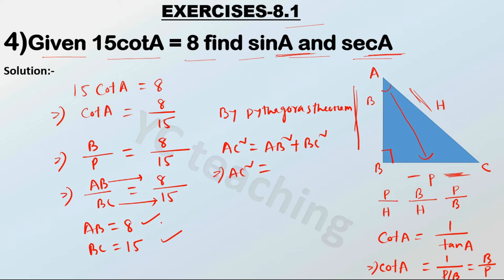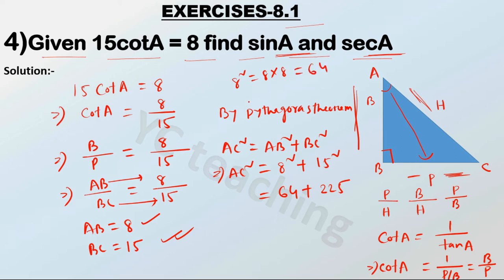AB is equal to 8, so we write 8 square. BC is equal to 15, so we write 15 square. 8 square is equal to 64, and 15 square is equal to 225.